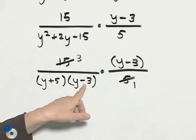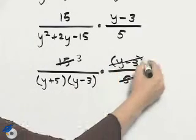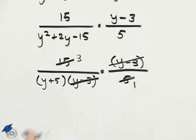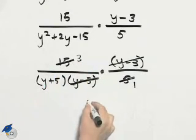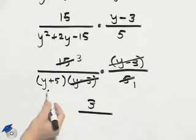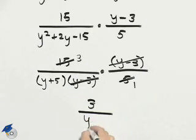I also notice that there is a common factor of y minus 3, which can be divided out, so I'm left with 3 in the numerator. 3 times 1 is 3, and the denominator I'm left with y plus 5 times 1, which is y plus 5.